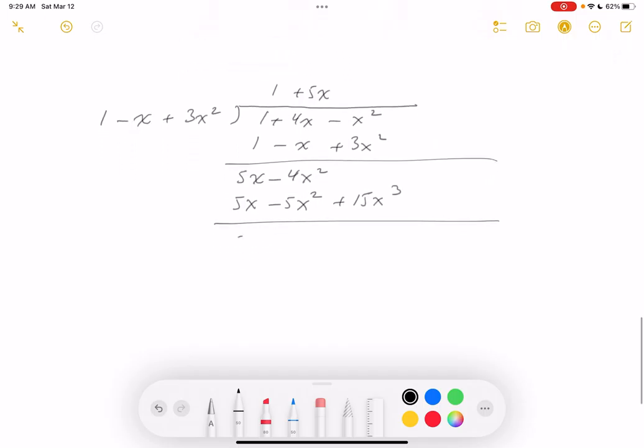Subtract. What do you get? x squared. By the way, we're only going to take it out to five terms. Minus 15x cubed. Let's repeat.